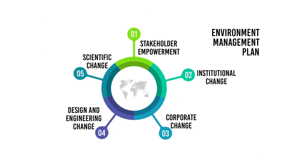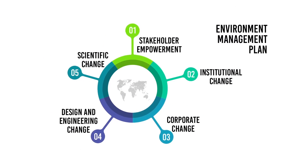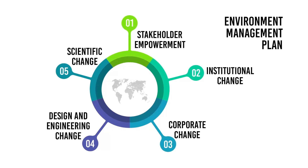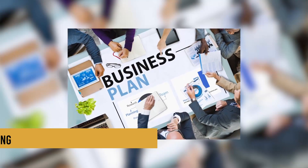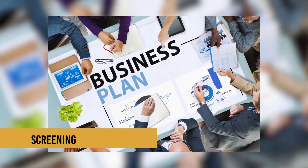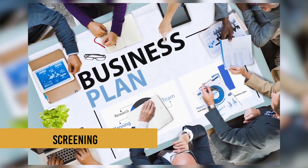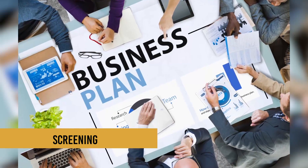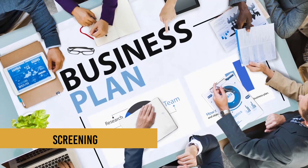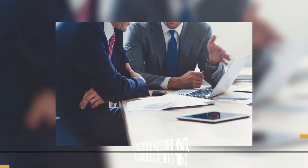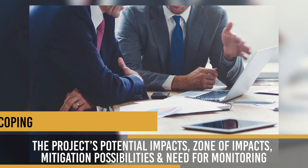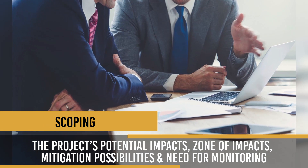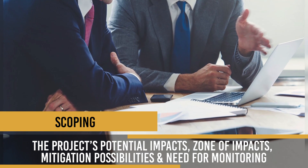The EIA process is a cyclical process with interaction between the various steps. Screening: the project plan is screened for scale of investment, location, and type of development, and whether the project needs statutory clearance. Scoping: the project's potential impacts, zone of impact, mitigation possibilities, and need for monitoring are assessed.